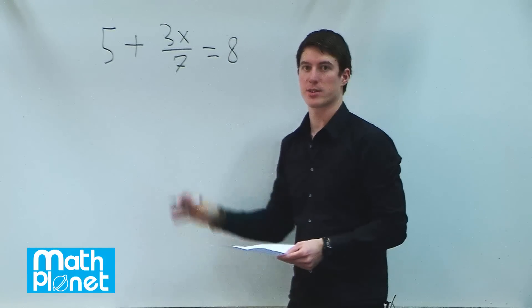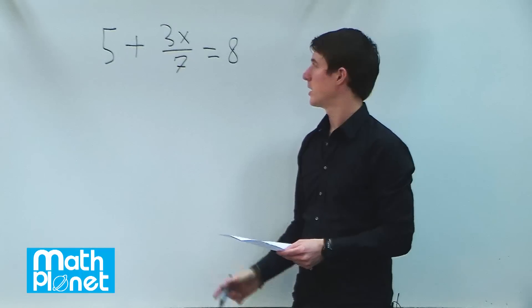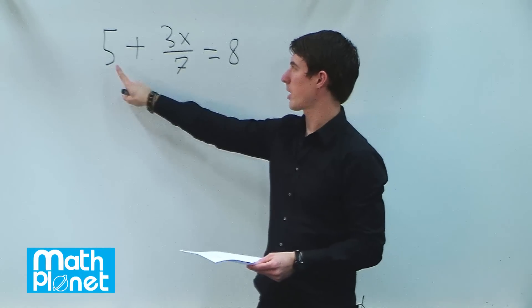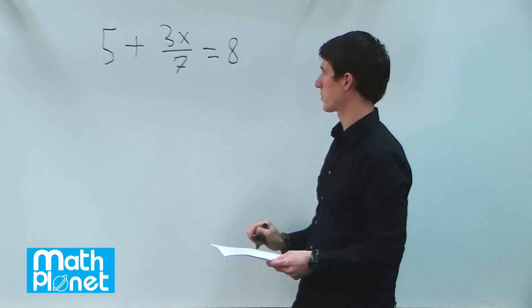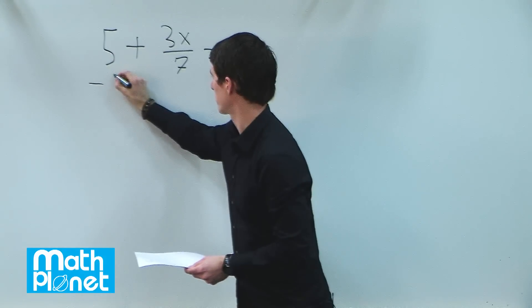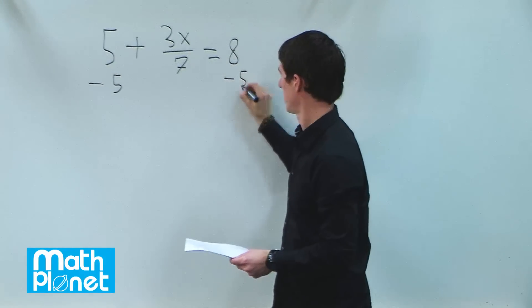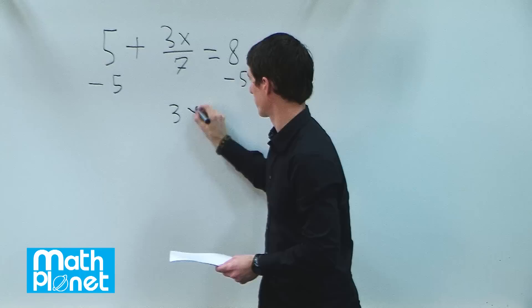We're going to solve this for x, so we'll say x equals something. To begin with, we need to do an inverse operation to get rid of this 5, and then we'll have the x term by itself and the number term on the other side. So if we subtract 5 from both sides, then we just have 3x over 7.